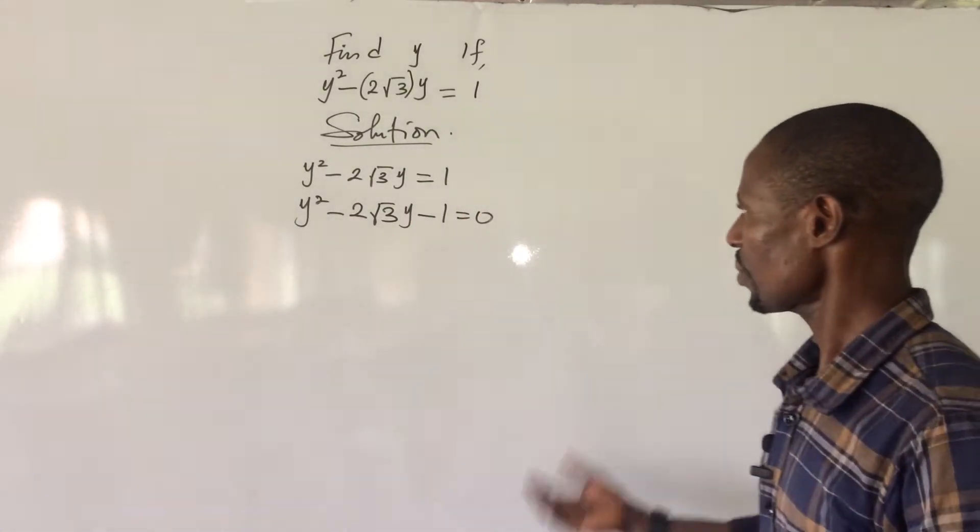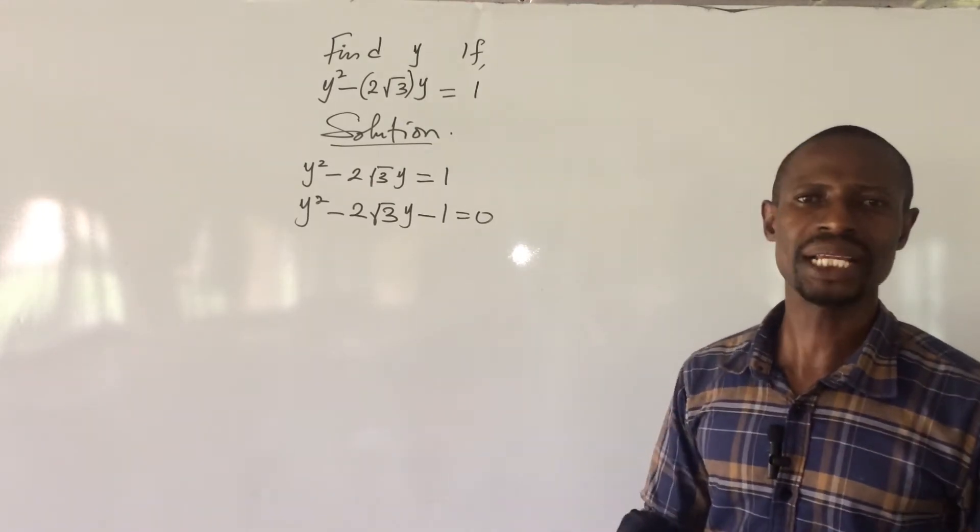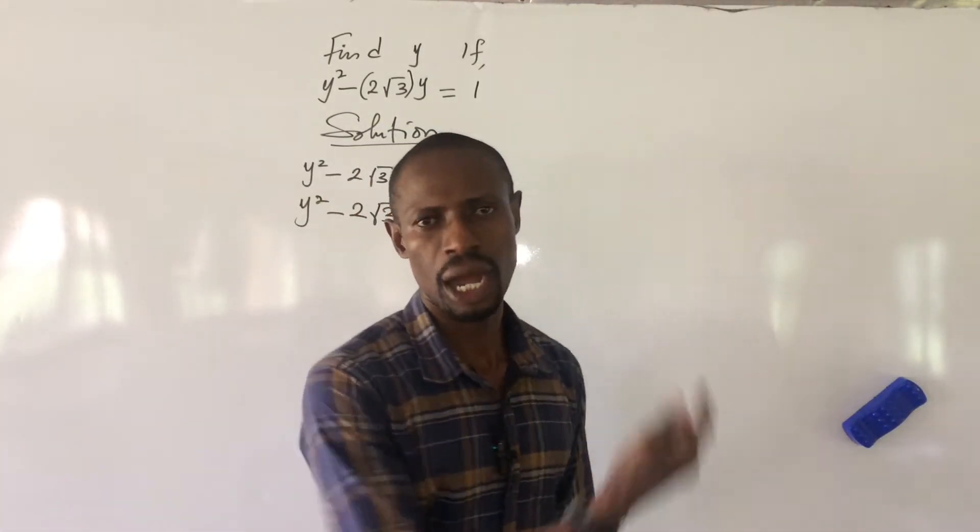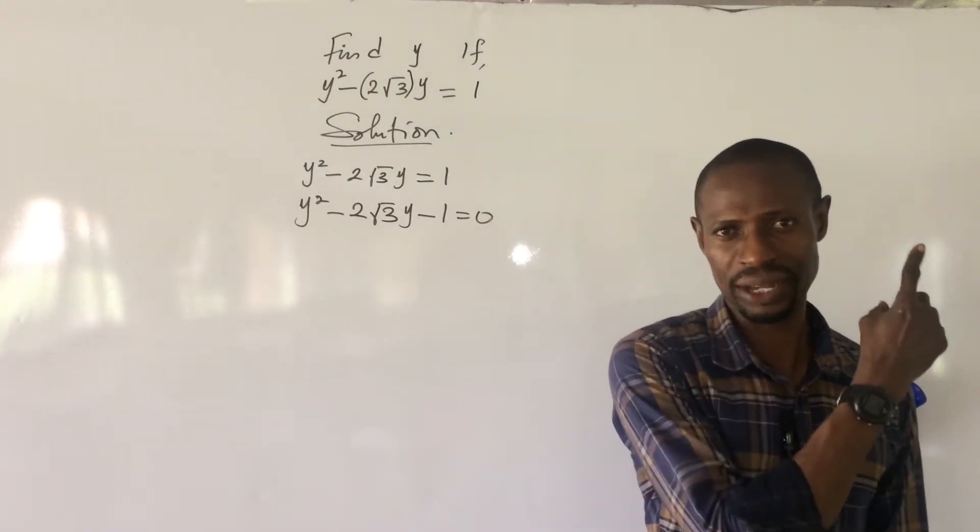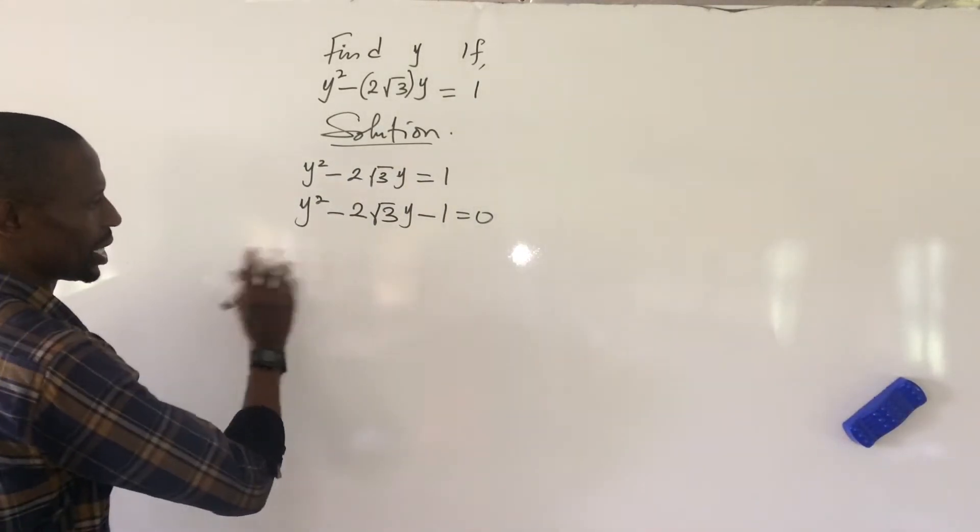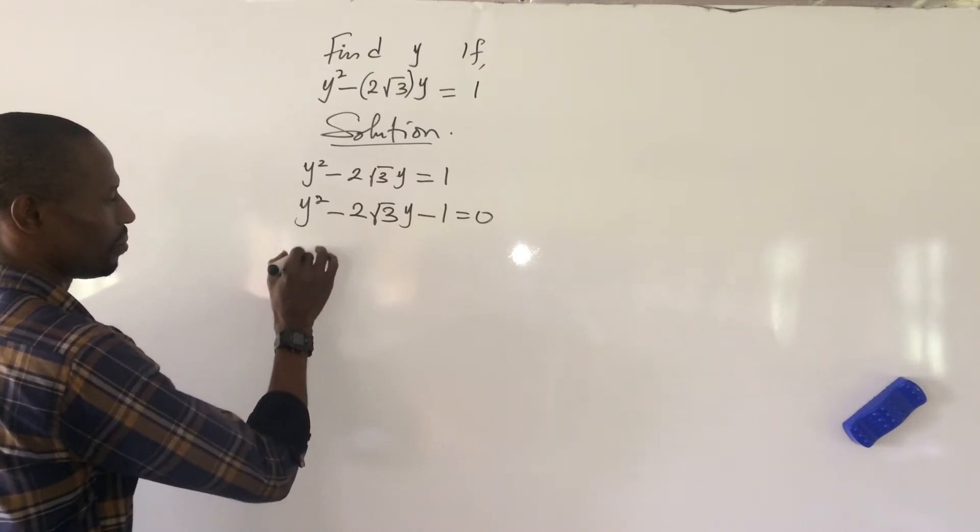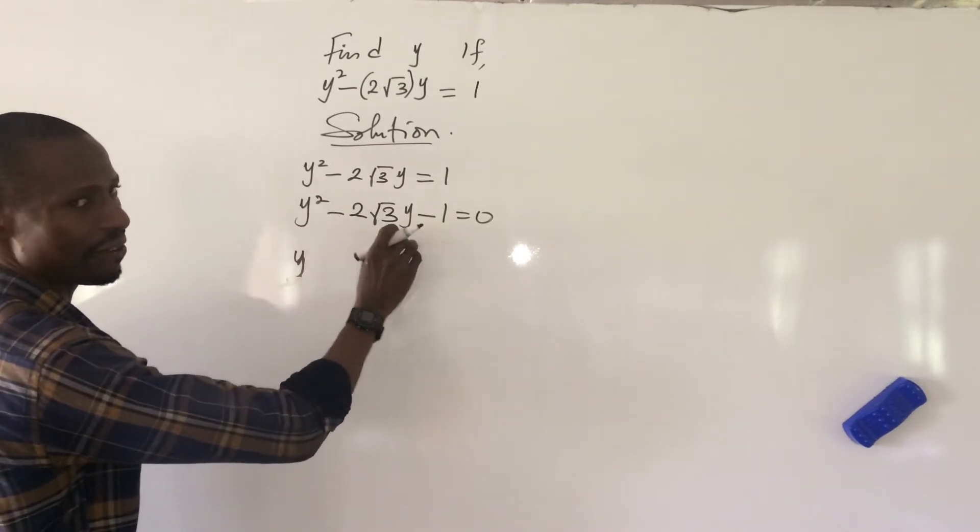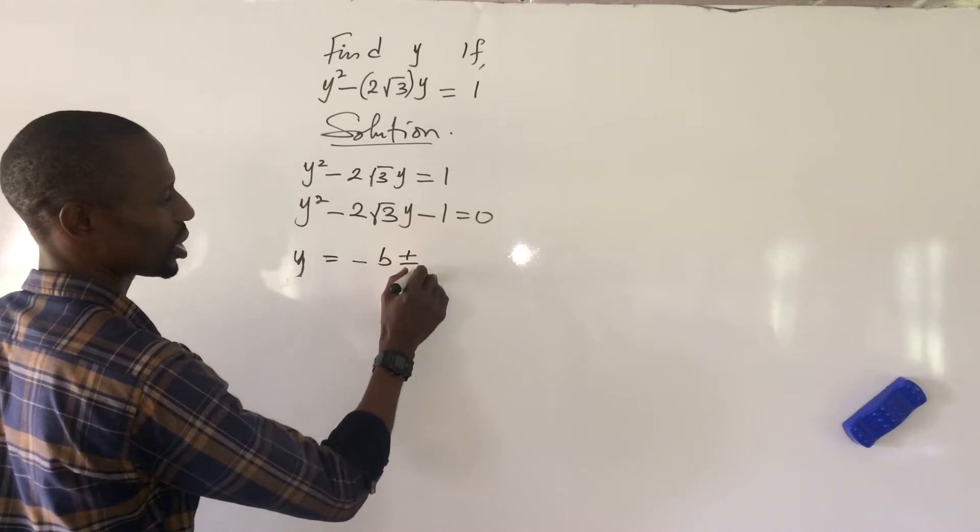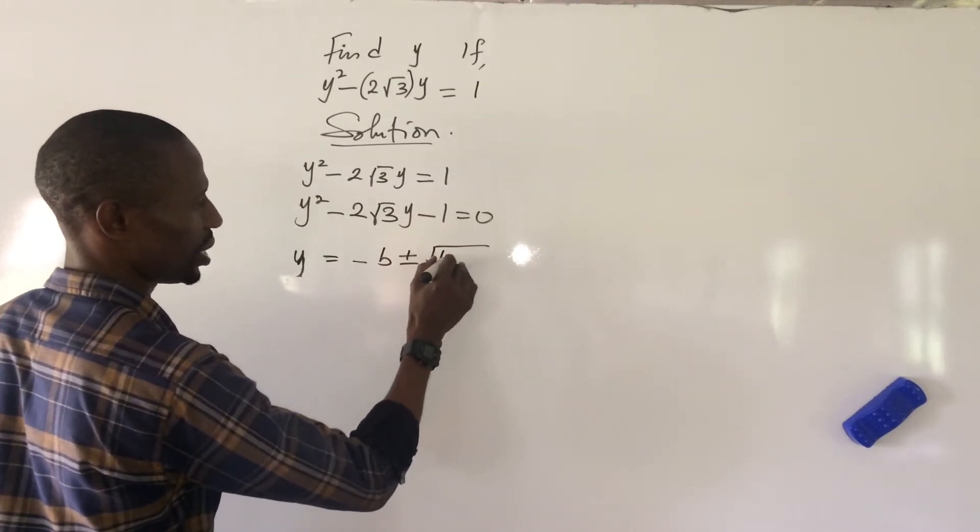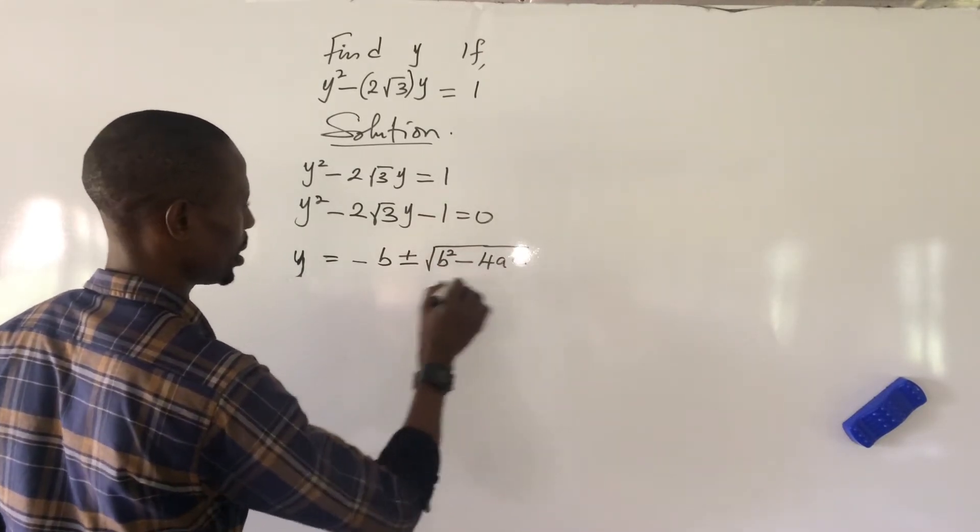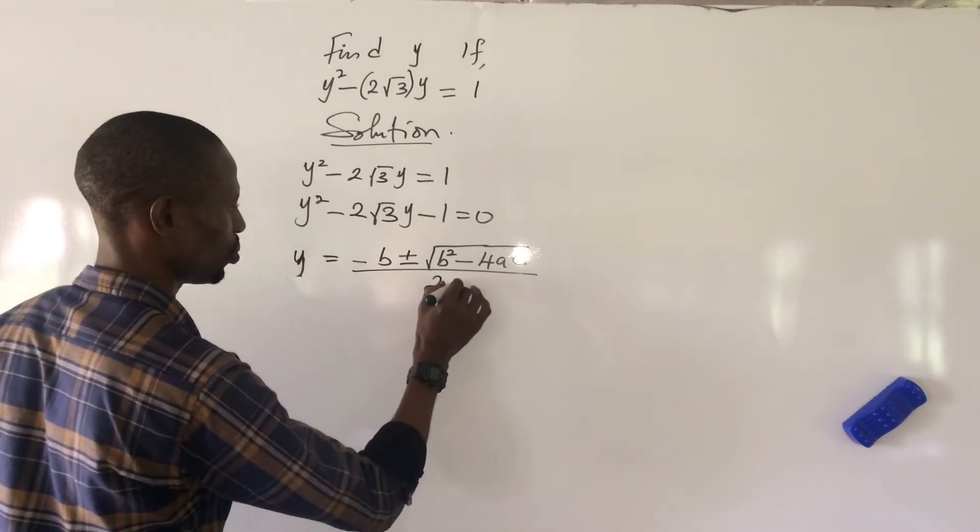All right. So, from here, we proceed again. We go ahead to bring out our quadratic formula. Now, there is a video I produced. It's showing up here. You can watch that video on how to derive the quadratic formula. Very easy. So, let's proceed. Our quadratic formula says that y, we are breaking the quadratic formula based on the alphabet we have here, is equal to minus b plus minus the square root of b squared minus 4ac all over 2a.